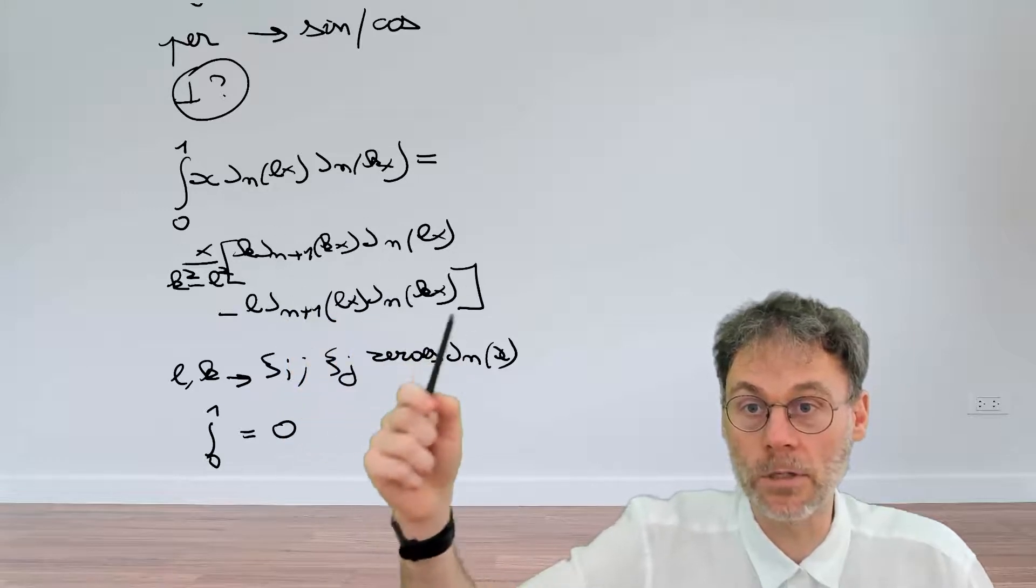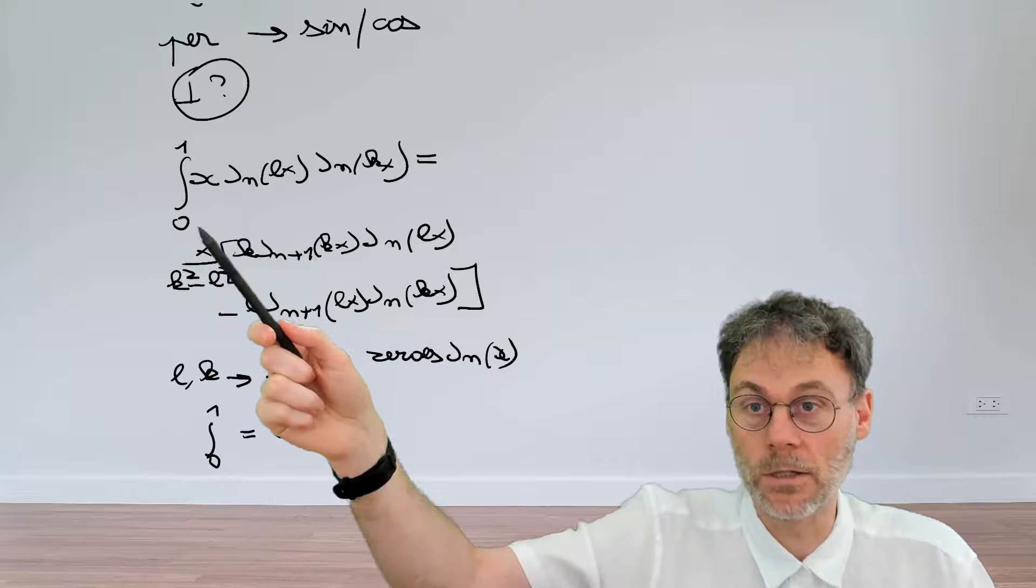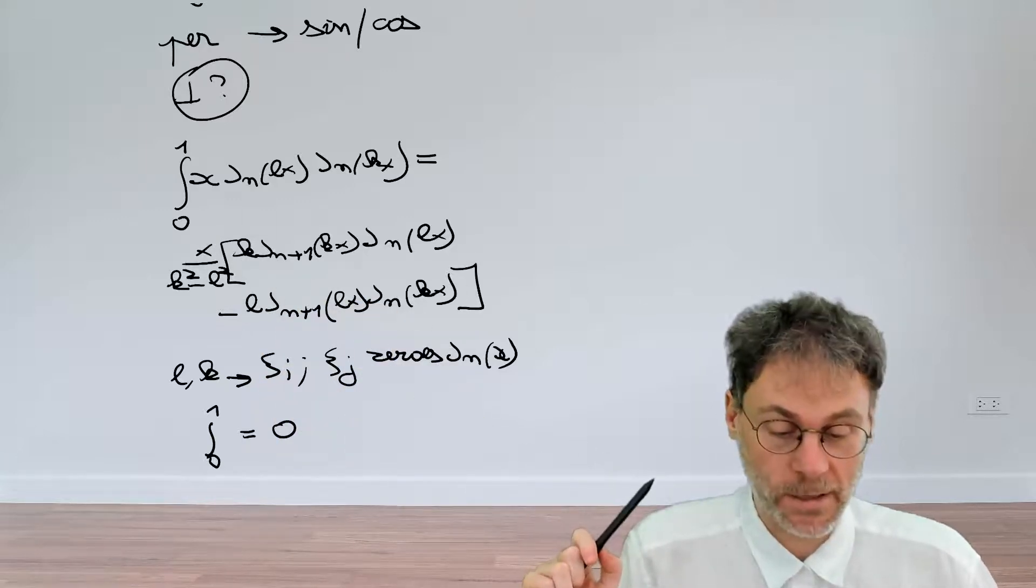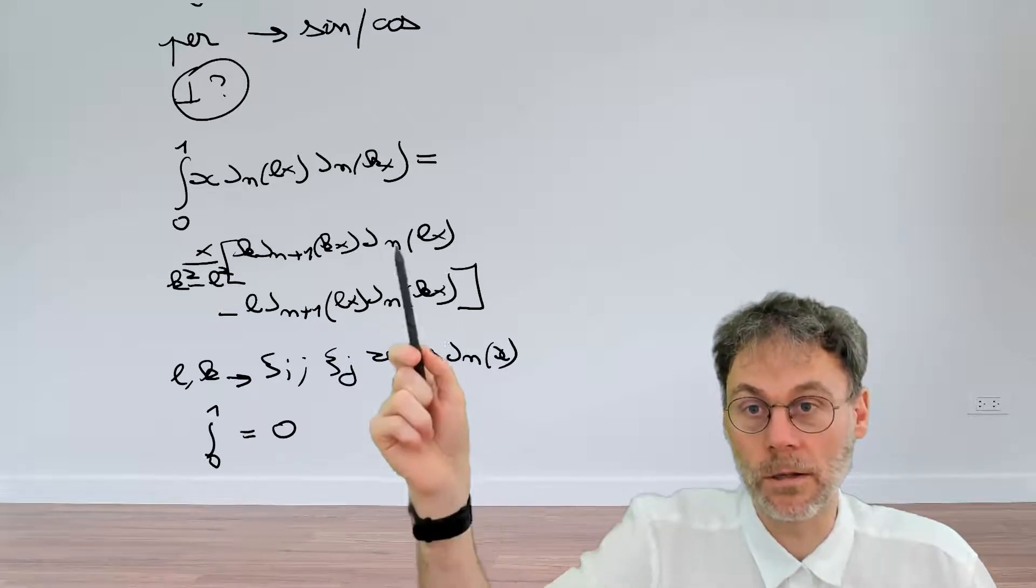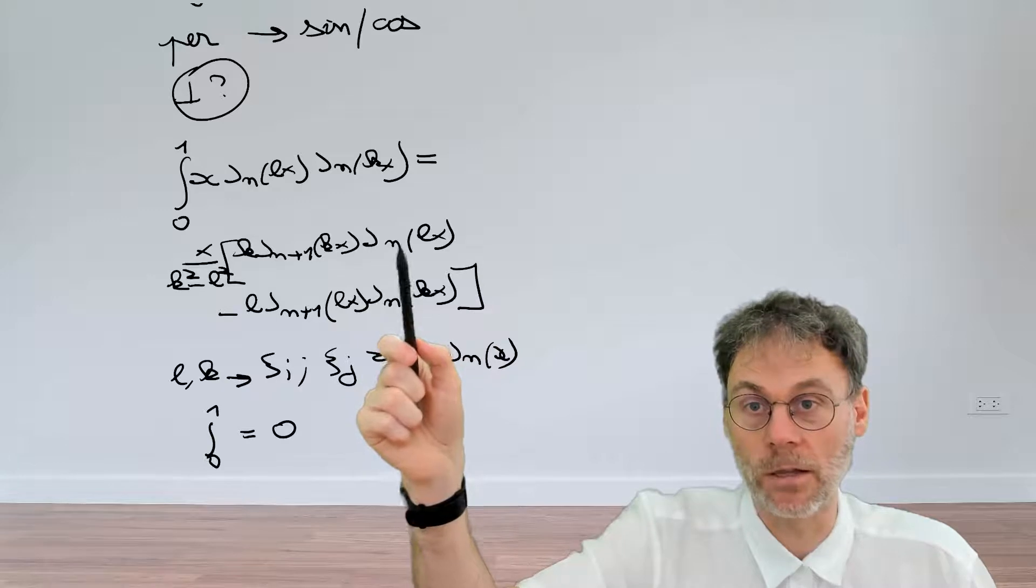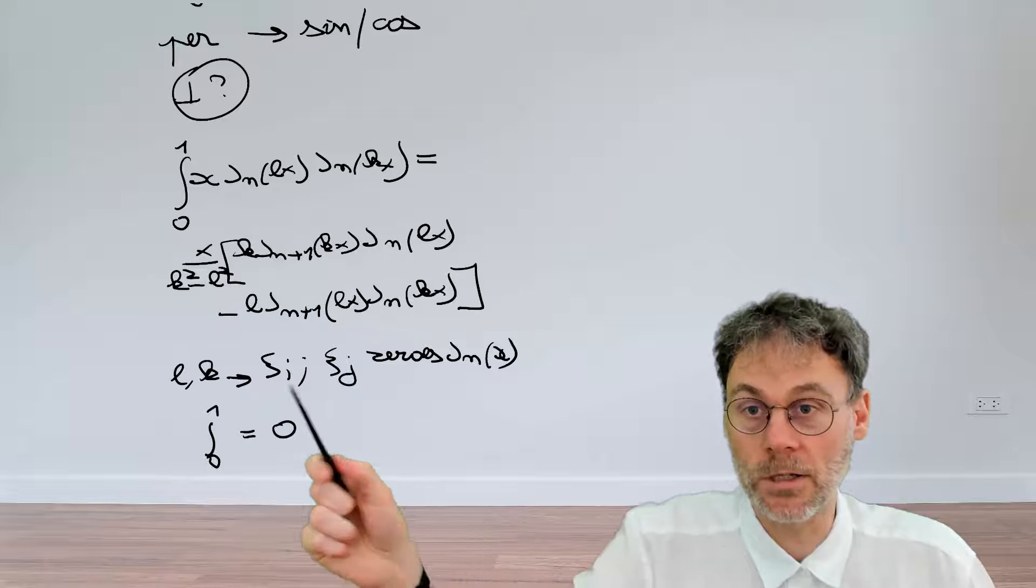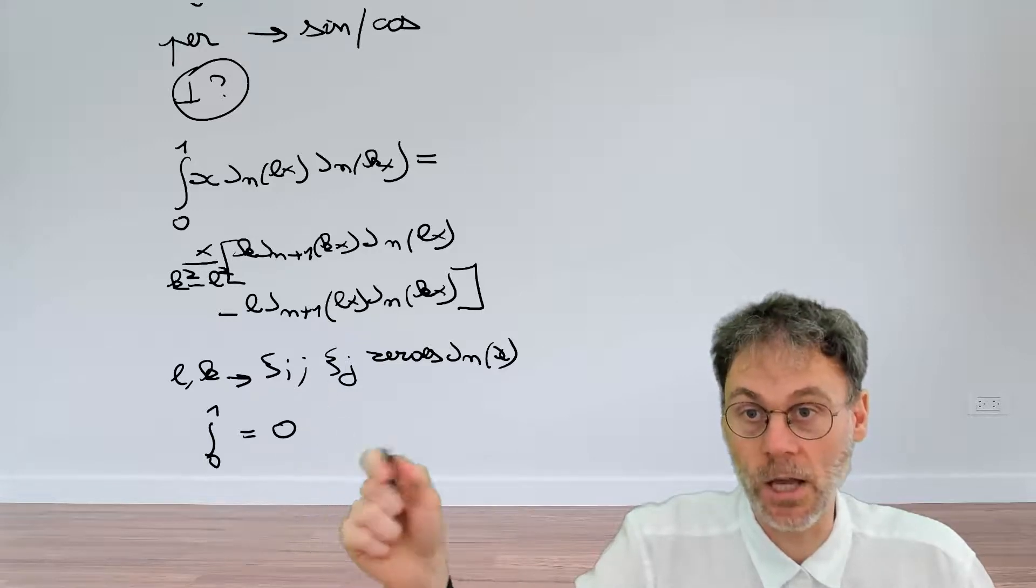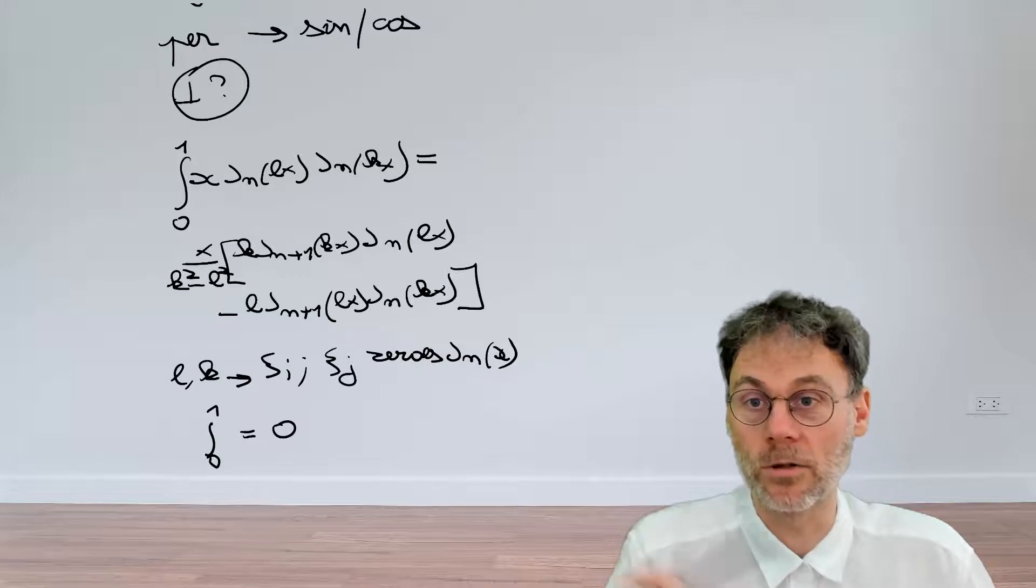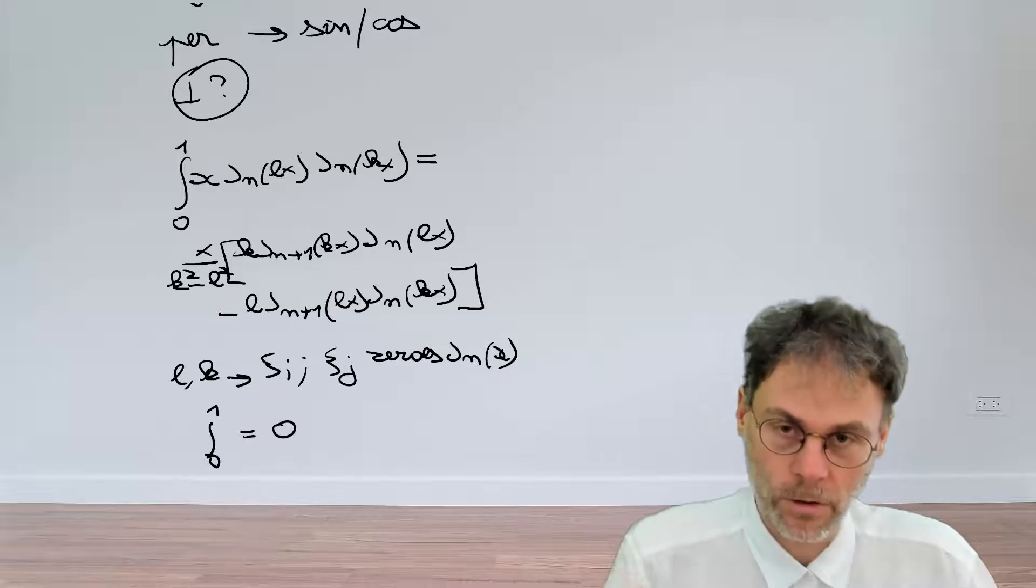Why is that the case? Well, let's take a look at the lower bounds. If we evaluate that at x equal to zero, then this term will make sure that there's nothing left. If we evaluate this at x equal to one, then we need to look at these particular terms here. So this will become J_n(ξ_i) and this will become J_n(ξ_j), but precisely because ξ_i and ξ_j are zeros of these functions, these terms will also vanish. So this means that the integral is zero.